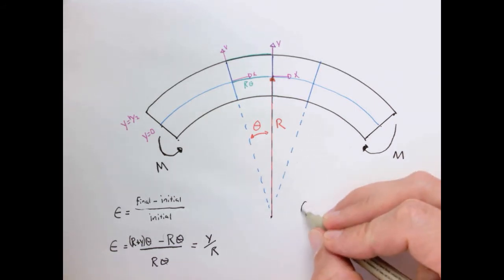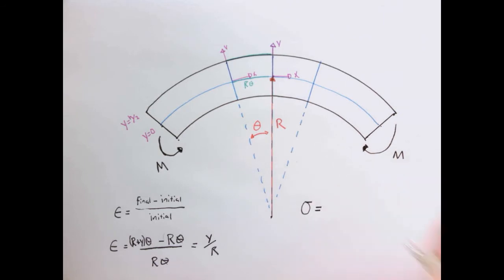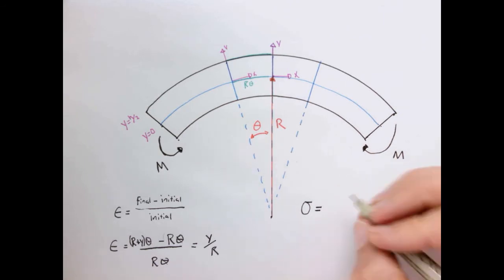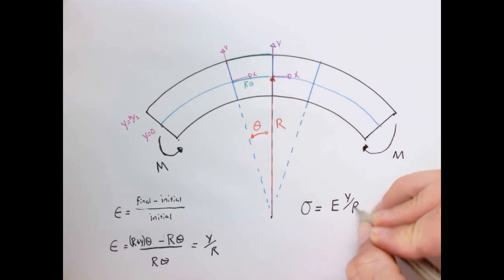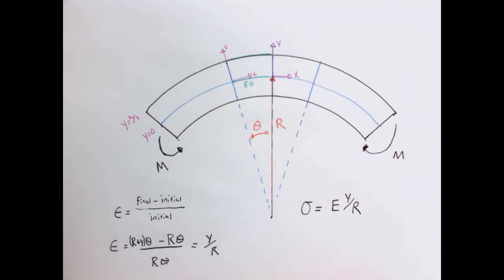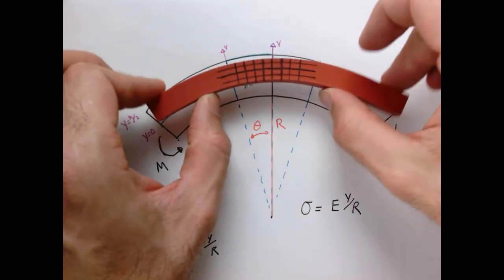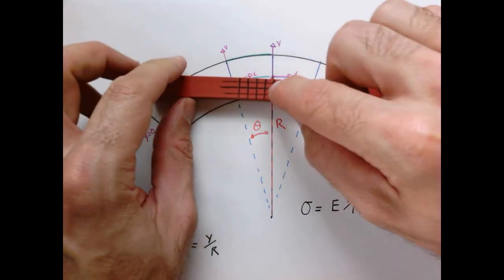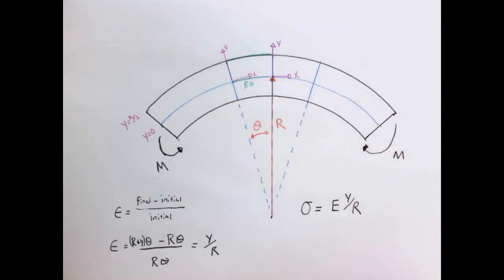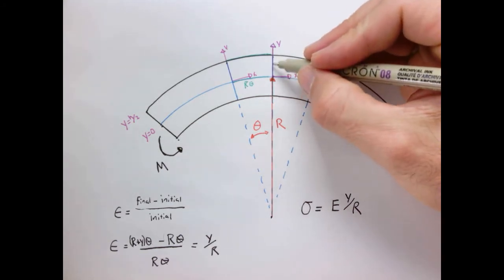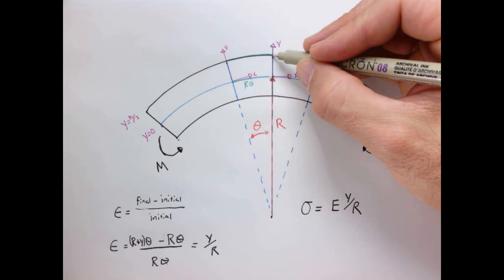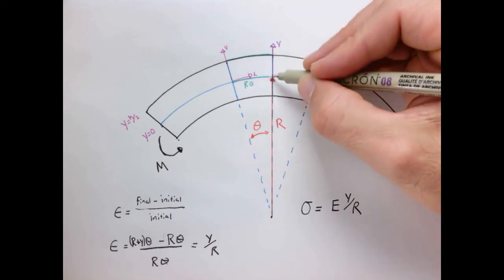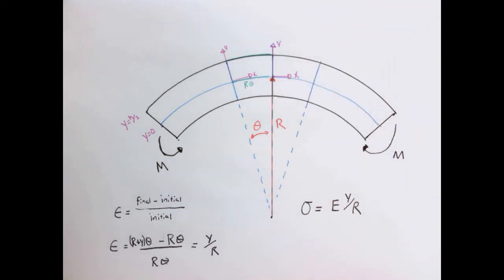Since we're talking about a linear elastic solid, the stress is likewise simply the elastic modulus E times y over the radius of curvature r. So we have a very simple expression for the strain as a function of distance from what's called the neutral axis — the line along the center. The stress increases as we move away from the neutral axis, and it goes negative as we move down.